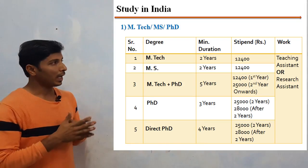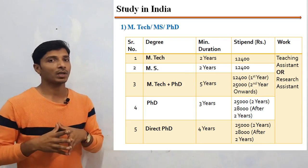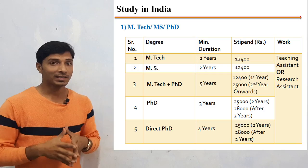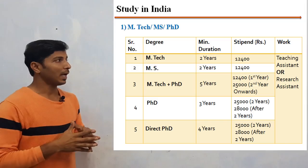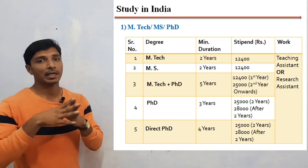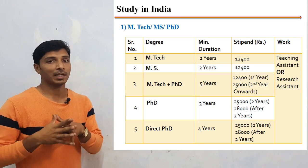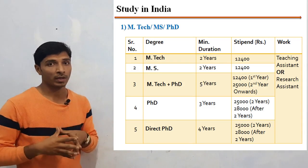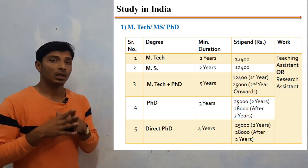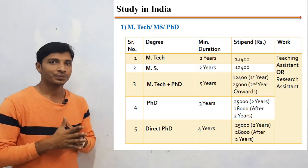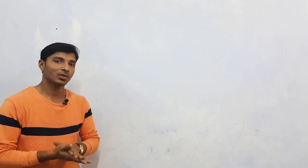For PhD, for the first 2 years you will get ₹25,000 stipend, and for the remaining 2 to 3 years you will get ₹28,000. If your grades are excellent, you can also directly apply for a PhD without doing M.Tech. As a direct PhD student, you will get ₹25,000 for the first 2 years and ₹28,000 after that. The minimum duration is 4 years. In all cases, you need to work as a teaching assistant or research assistant to receive the stipend.